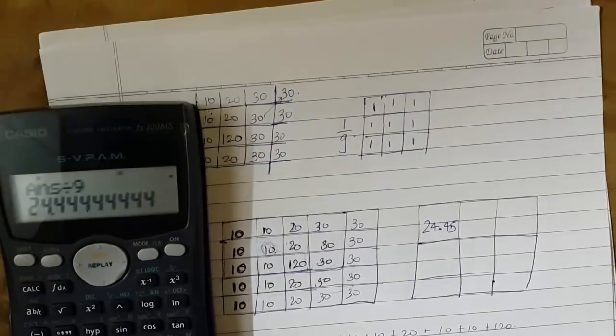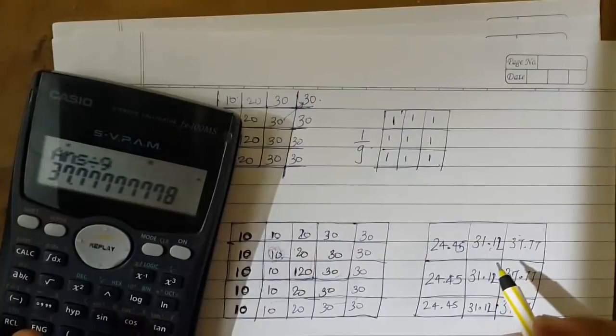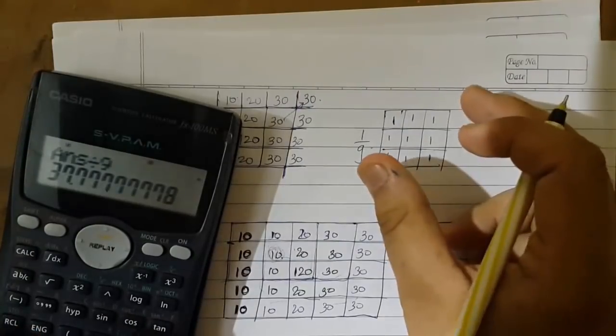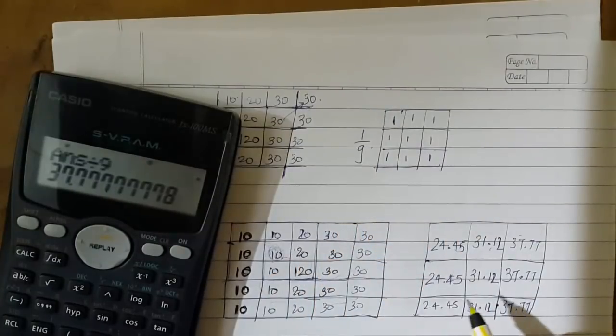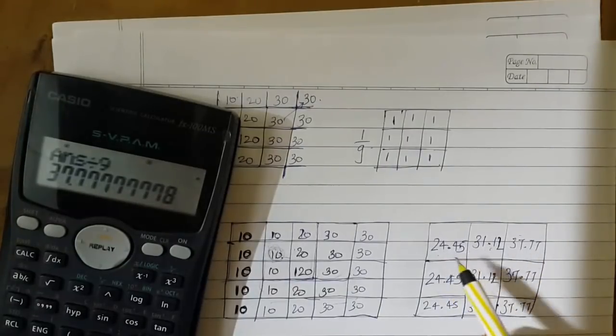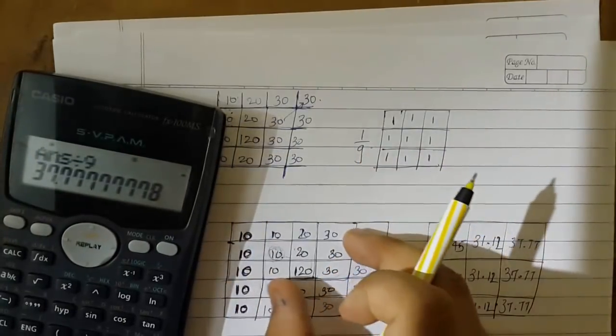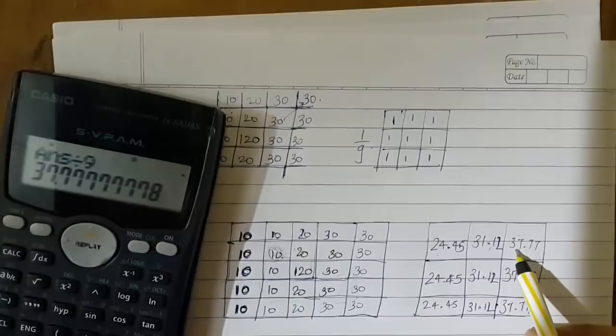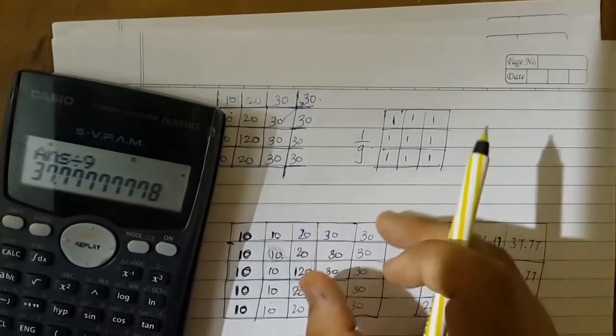And now we will look at how the image will look after doing all the subsequent calculations by moving the mask one by one, that is cell by cell. Now after completing all the iterations of moving the mask over each region as I showed, I get the following values. We saw that we first got 24.44 or 24.45, then we got 31.12 when we imposed this mask over this region, then we got 37.77 when we imposed this mask over this 3x3 region.